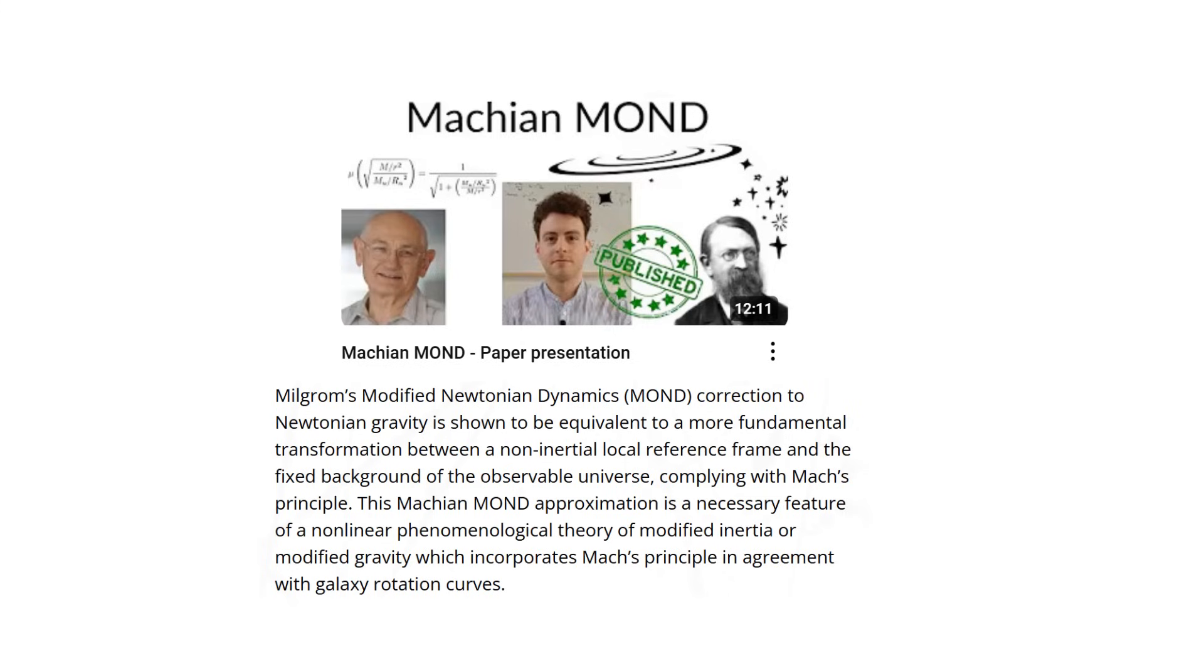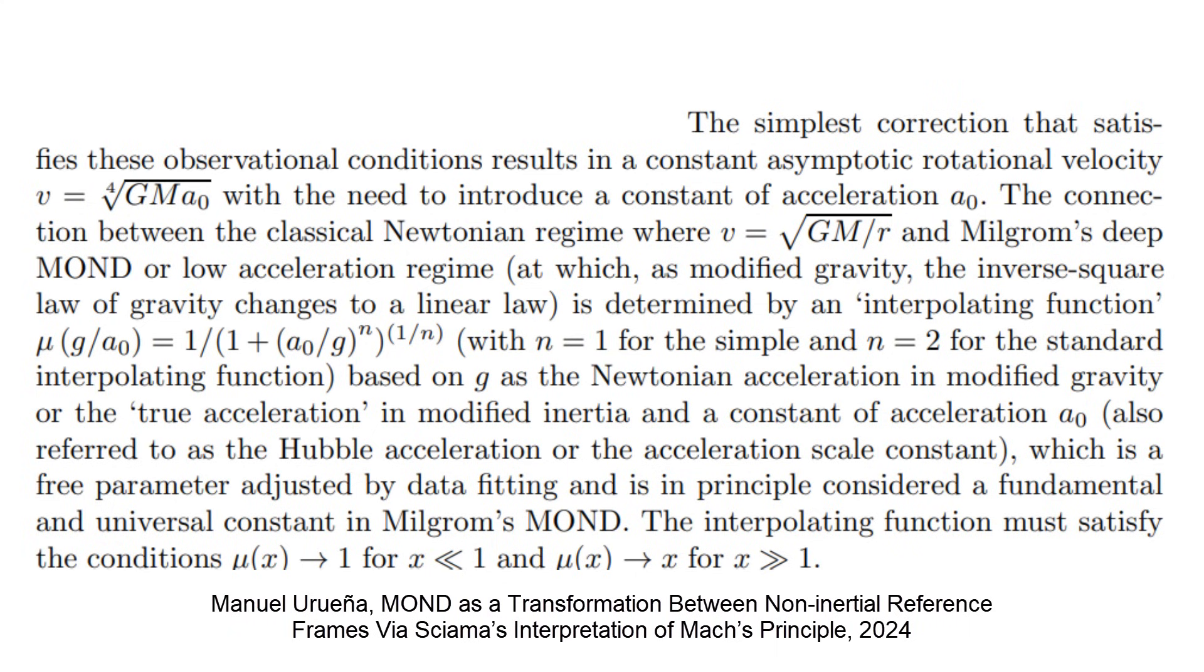We were the first ones to show that MOND can be reformulated in terms of Mach's principle without fundamental constants, with the exception of speed of light, in what we called Machian-MOND, which we explained in our previous video, Machian-MOND paper presentation. MOND requires the introduction of one free parameter, an acceleration scale which coincides with the gravitational field intensity of the observable mass of the universe.